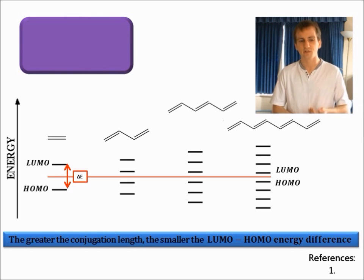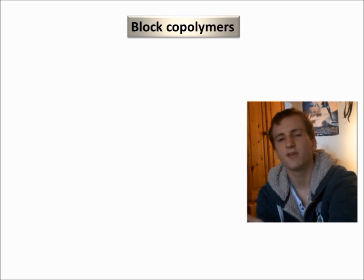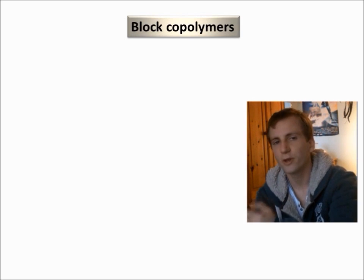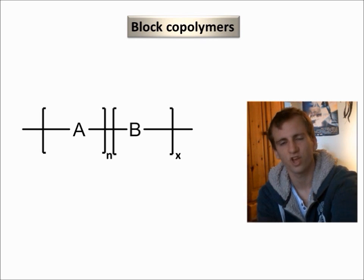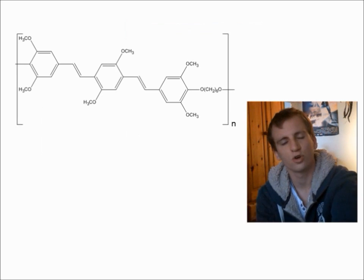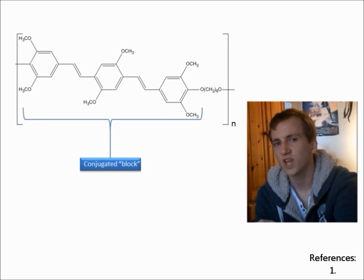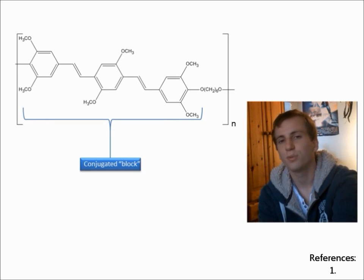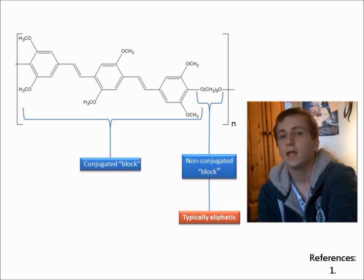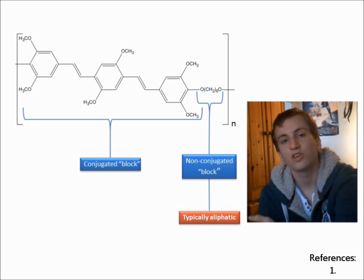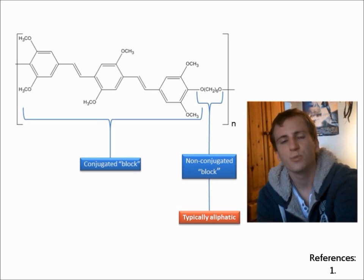One of the ways we can achieve this is by use of conjugated, non-conjugated block copolymers. A block copolymer is a polymer made from at least two different monomers, in which the different monomers make up different sections, different blocks of the chain. For a conjugated, non-conjugated block copolymer, we can see blocks of the polymer that are in conjugation, separated by blocks of polymer that aren't in conjugation. Now a great way of synthesising conjugated, non-conjugated block copolymers is by the Wittig route.